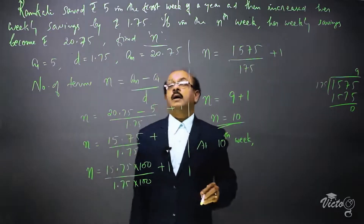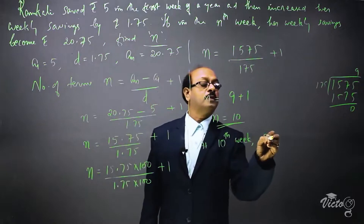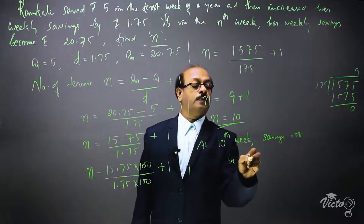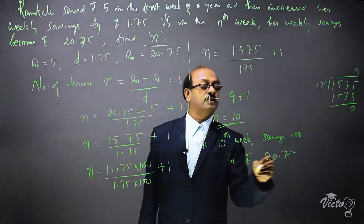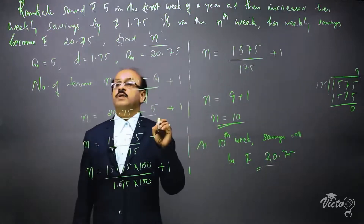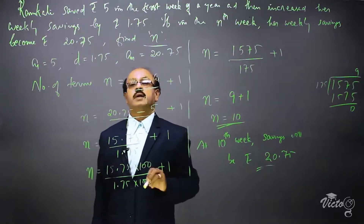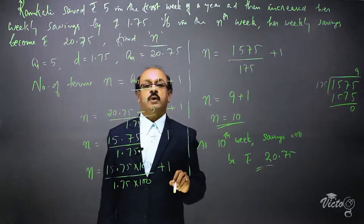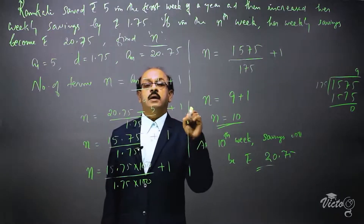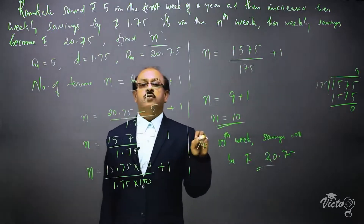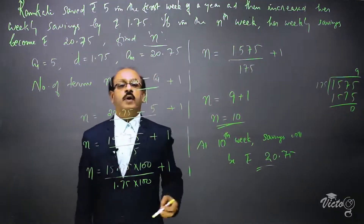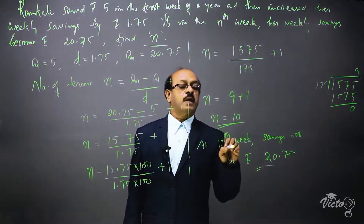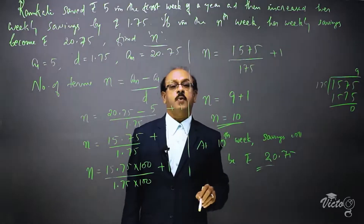In conclusion, at the 10th week, weekly savings will become rupees 20.75. We took the first term as rupees 5, the last term as 20.75, and common difference d = 1.75. Using the formula n = (an − a1) / d + 1 and simplifying, we get n = 10. That is the answer — at the 10th week the savings will be rupees 20.75.